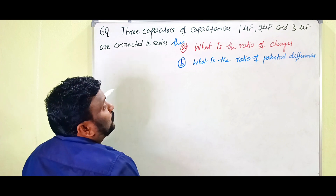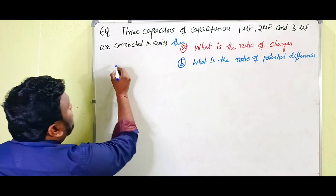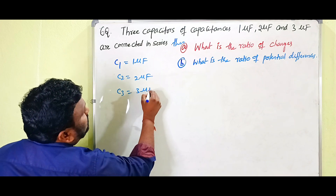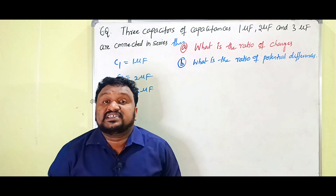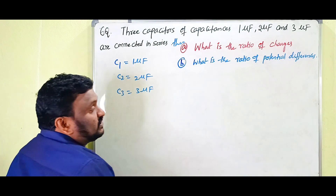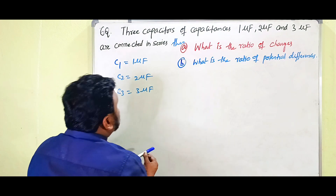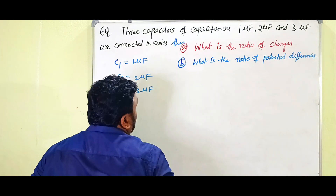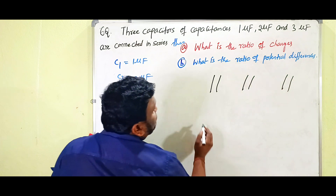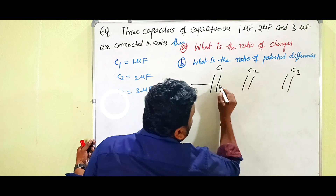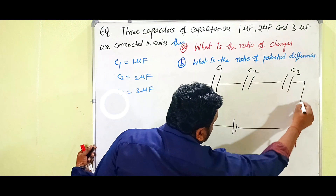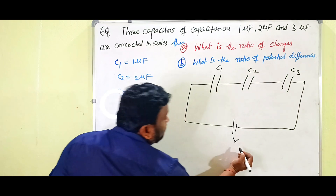So what is given: C1 is 1 microfarad, C2 is 2 microfarad, and C3 is 3 microfarad. I have already explained series and parallel combination in four-mark answer videos available in the playlist — do check those. Now, this is the first capacitor, this is the second capacitor, and this is the third capacitor — C1, C2, and C3 — connected in series combination.